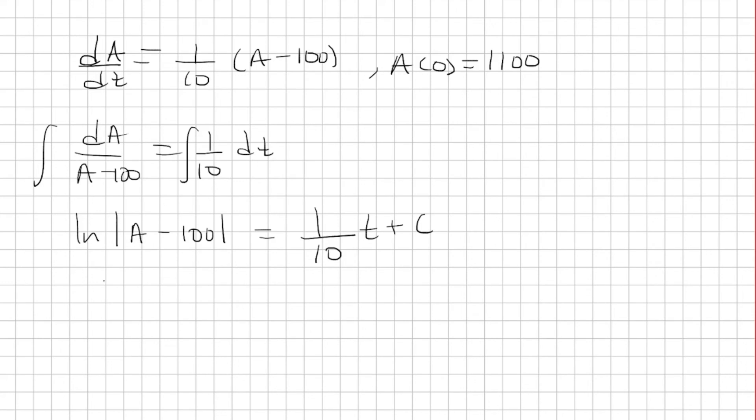Now I'm going to do e to both sides. The e to the natural log are going to cancel. I'm left with A minus 100 is e to the 1 over 10 t. And then this e to the c. So we break this up as e to the 1 over 10 t times e to the c.